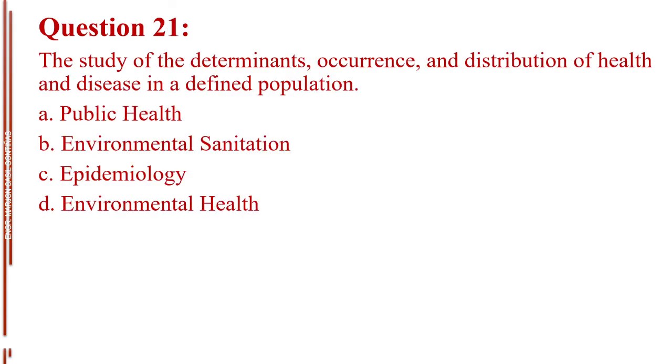Question number 21. The study of the determinants, occurrence, and distribution of health and disease in a defined population. A. Public health. B. Environmental sanitation. C. Epidemiology. D. Environmental health. The answer is Letter C, epidemiology.